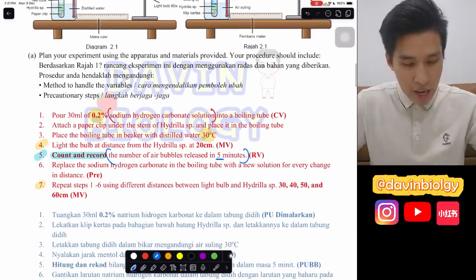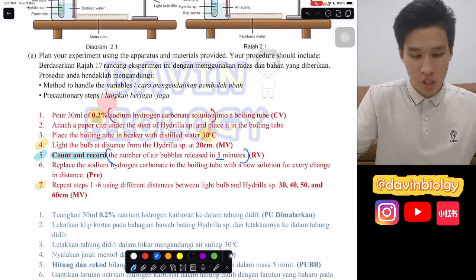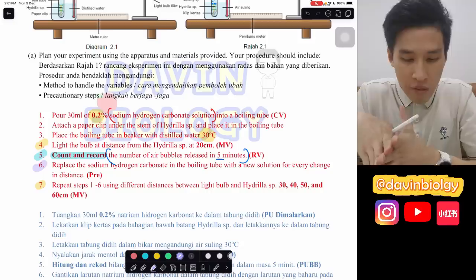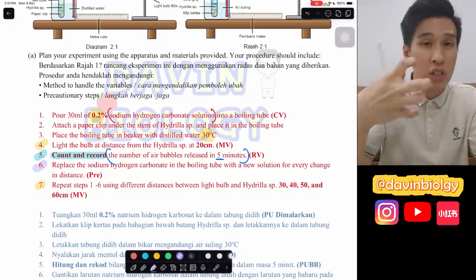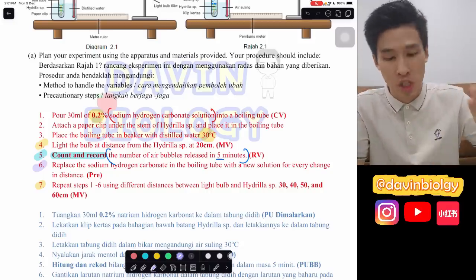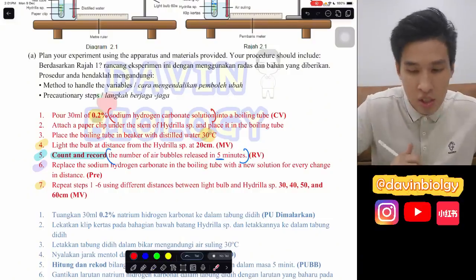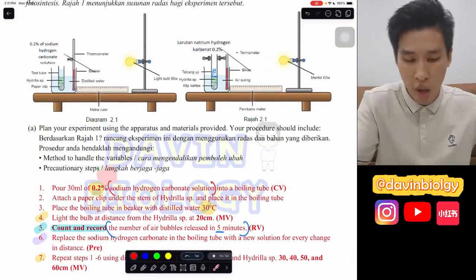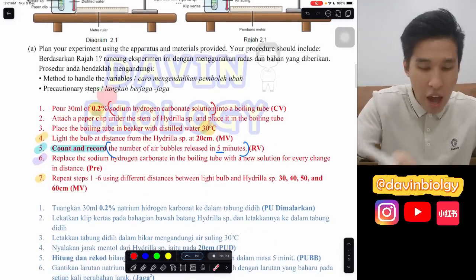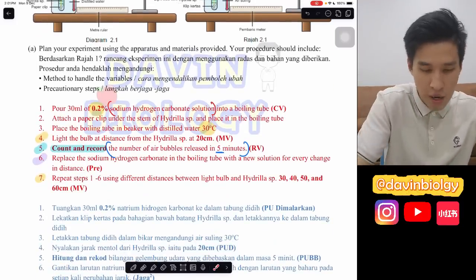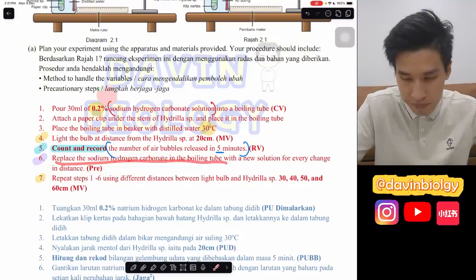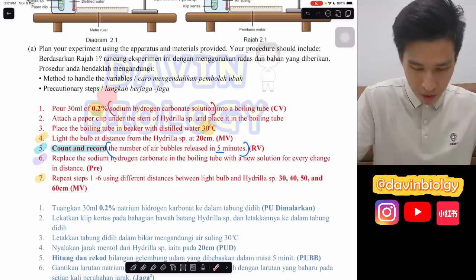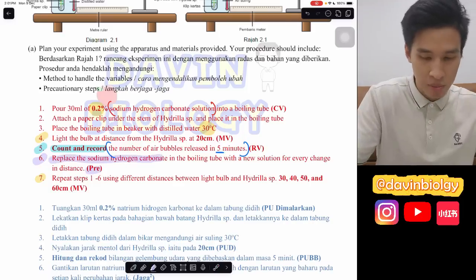For the precautionary step, after every time you change the distance - say from 20 cm to 30 cm - you need to replace the sodium hydrogen carbonate solution. If you don't change it, the carbon dioxide concentration will decrease because the plant uses it up. So replace the sodium hydrogen carbonate solution in the test tube after every distance change. That is your precautionary step.